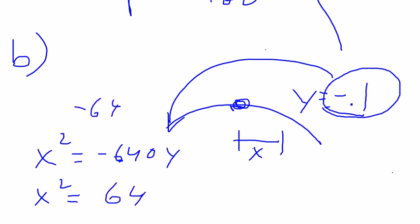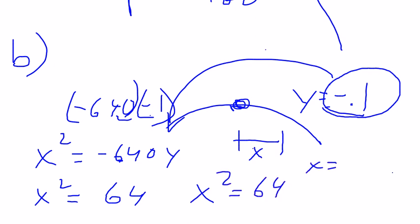Because negative 640 times negative 0.1 is going to move the decimal one time, and I'm going to get rid of the two negative signs. So I have x squared equals 64. 64, x then would equal 8.